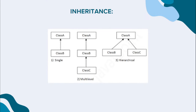There are different types of inheritance. The first is called single inheritance. The second is called multi-level inheritance, which occurs whenever a sequence or chain of inheritance happens. The third is called hierarchical inheritance. Based on your requirement, you can use whichever type fits your application.